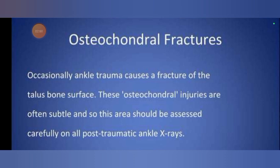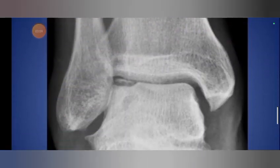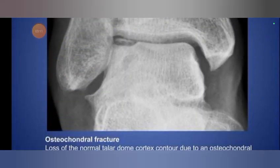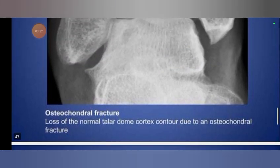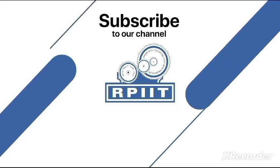Next is osteochondral fractures. Occasionally, ankle trauma causes a fracture of the talus bone surface. These osteochondral injuries are often subtle, so this area should be assessed carefully on all post-traumatic ankle X-rays. This diagram shows the osteochondral fracture and loss of the normal talar cortex contour due to an osteochondral fracture.